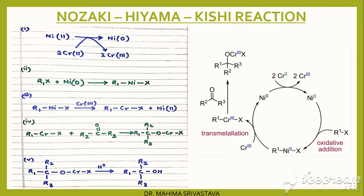Here are the various steps shown for NHK reaction. In step 1, nickel from oxidation state 2 gets converted to oxidation state 0 in the presence of chromium, which itself gets changed from oxidation state 2 to oxidation state 3.